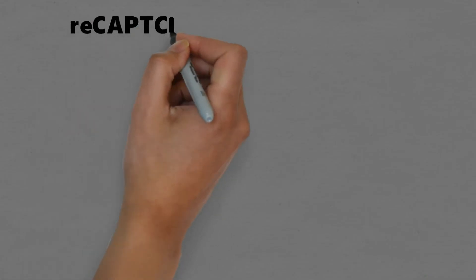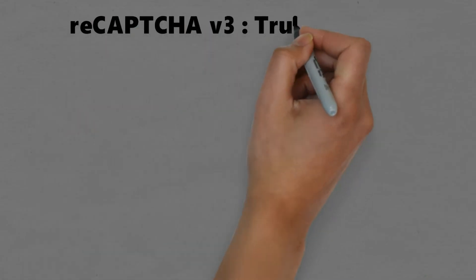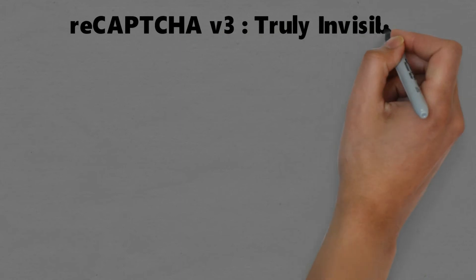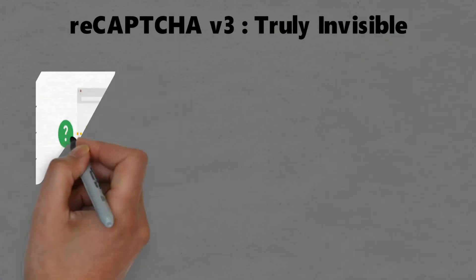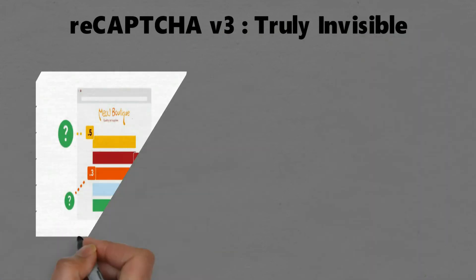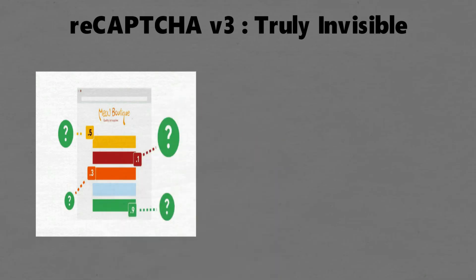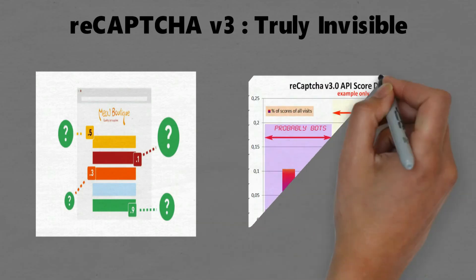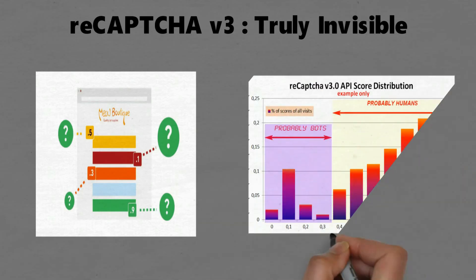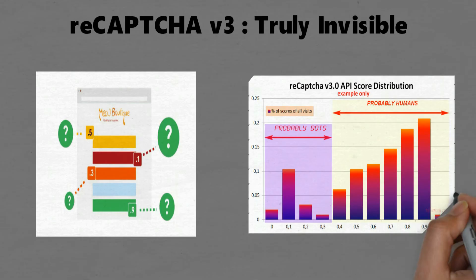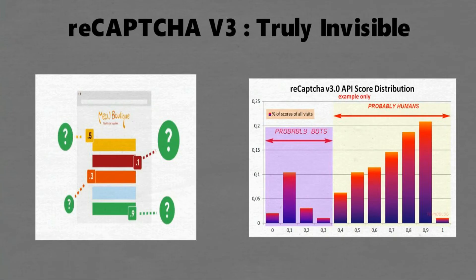Now let's discuss reCAPTCHA v3. Version 3 is truly invisible — it does not show anything to the users. There is no challenge to select specified objects on images like in older versions. Instead, it returns probability scores between 0.0 and 1.0 from all actions on your website. If the score is between 0 and 0.3 then it is a bot, and if the score is between 0.4 and 1.0 then it is human.